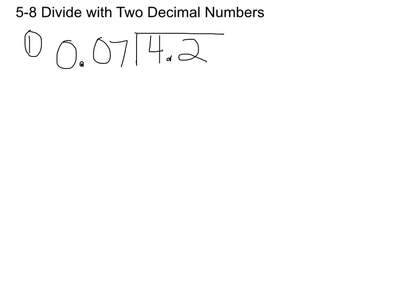So if I have a number that is in the hundredths here, then I have to multiply that by 100 to take seven hundredths and make it seven whole. Now don't forget, you can't just magically change seven hundredths to seven whole. If we multiply the divisor by 100, we have to multiply the dividend by 100.